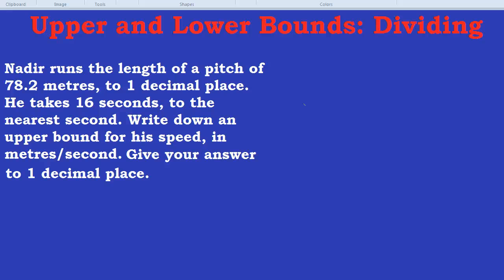Whenever you have to divide using upper and lower bounds, you have to be extra careful. And let's see why. In this question we have: Nadir runs the length of a pitch of 78.2 metres to one decimal place. He takes 16 seconds to the nearest second. Write down an upper bound for his speed in metres per second. Give your answer to one decimal place.